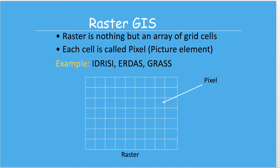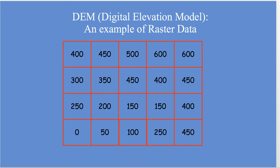Rasters are just an array of grid cells — a bunch of pixels. Each cell is called a pixel, arrayed in order, and they have to fall into a rectangular shape. Pixel means 'picture element.' The types of raster GIS that handle this include Idrisi, ERDAS, and GRASS — typically remote sensing GIS products. One of the most famous types of raster data is the Digital Elevation Model, or DEM — an acronym you should know off the top of your head when working in GIS.